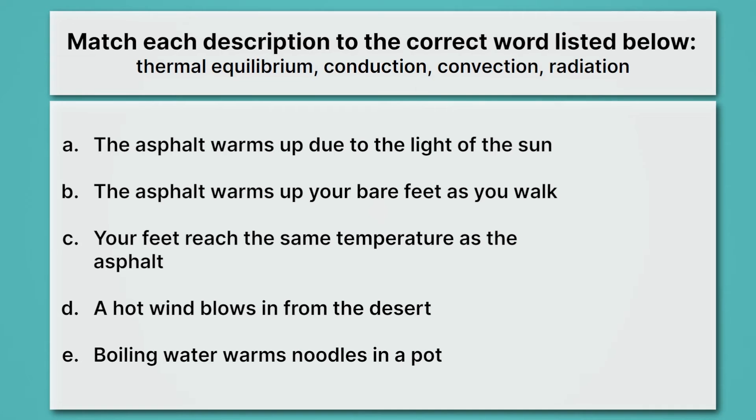Alright, were you able to get it? For A, the asphalt warms up due to the light of the sun. We saw this example in our intro. That turns out to be radiation. The light is warming up the asphalt. The asphalt warms up your bare feet as you walk. Well, now we're in direct contact, so that's going to be conduction. C is your feet reach the same temperature as the asphalt. Well, if they're the same temperature, first of all, those are some hot toes. Second of all, that's going to be thermal equilibrium when they're the same temperature.